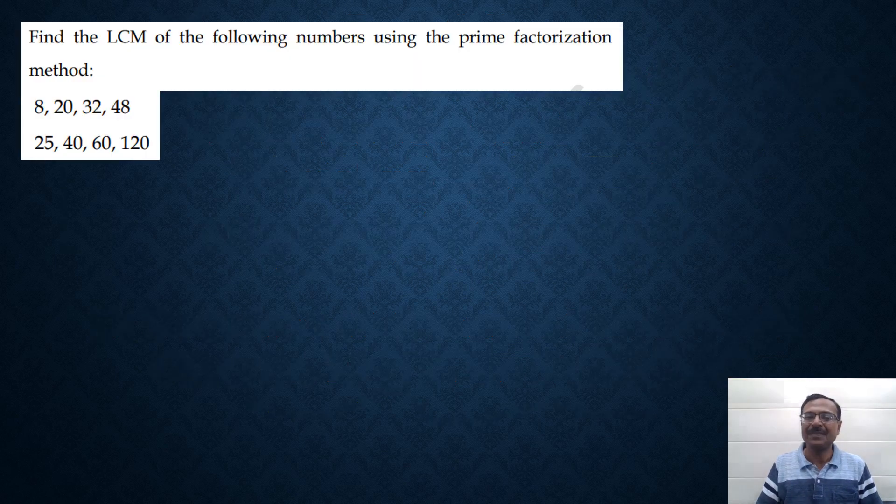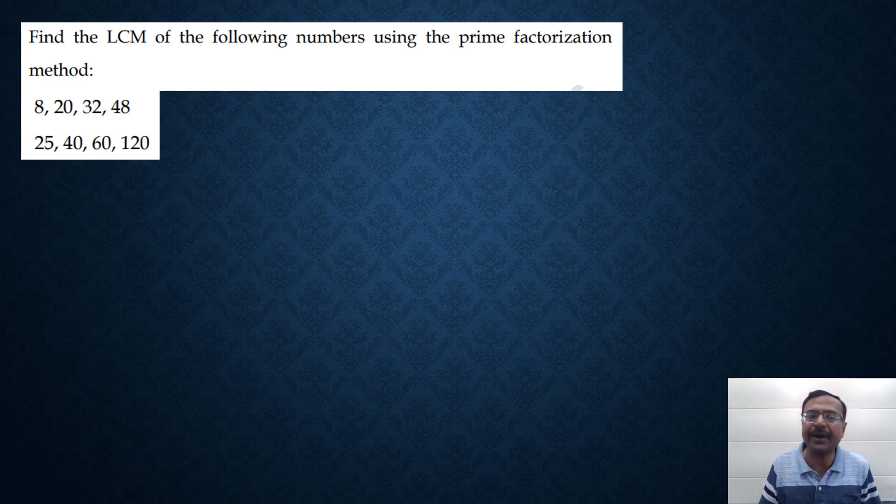Let's see the questions in hand for this video. Find the LCM of the following numbers using the prime factorization. We have 4 numbers here: 8, 20, 32 and 48. Let's make prime factors of these 4 numbers and then we will get to our answer.